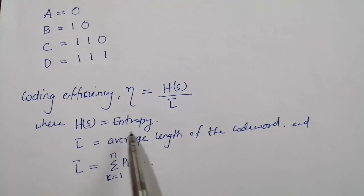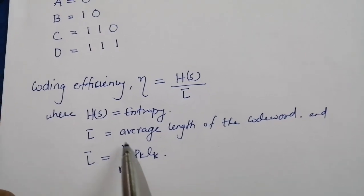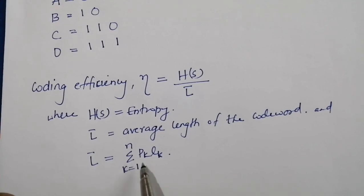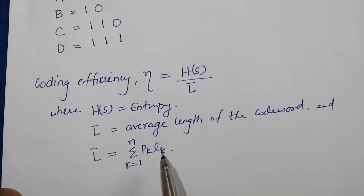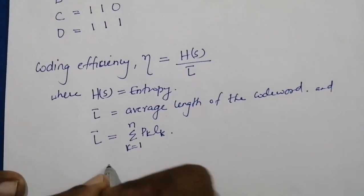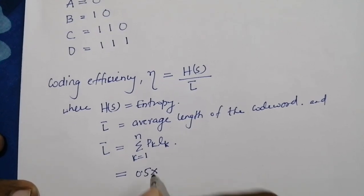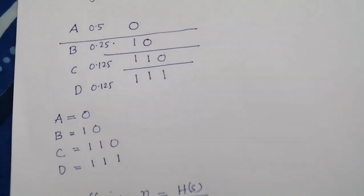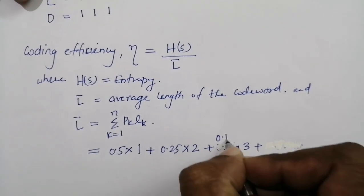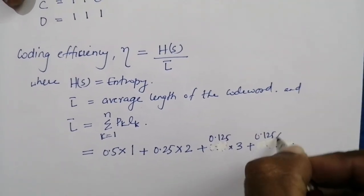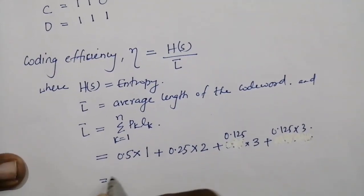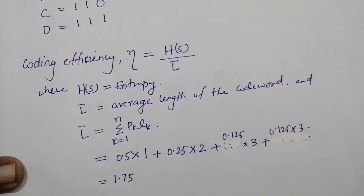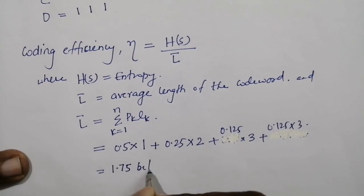Now we find the coding efficiency. The coding efficiency equals H(S) divided by L̄, where H(S) is the entropy of the source and L̄ is the average code length. L̄ = Σ p_k · L_k for k = 1 to n, where p_k is the probability and L_k is the length of the k-th symbol. So L̄ = 0.5×1 + 0.25×2 + 0.125×3 + 0.125×3 = 1.75 bits per symbol.